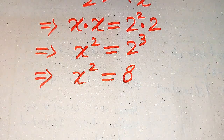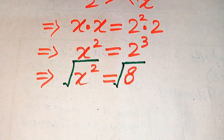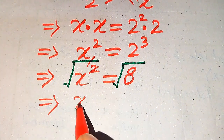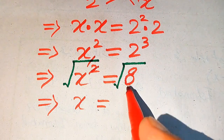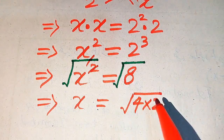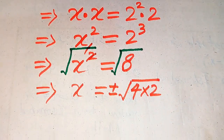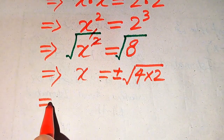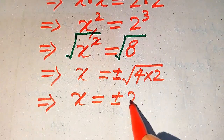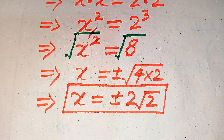To solve for x we need to remove the square sign from the left hand side, so we apply the square root on both sides. When you apply the square root on both sides, x squared becomes x. We write 8 as 4 multiplied by 2, and remember that when we apply the square root on both sides we write plus or minus. So x equals plus or minus the square root of 4 times the square root of 2, which gives us x equals plus or minus 2 times the square root of 2. These are the two roots of the given equation.